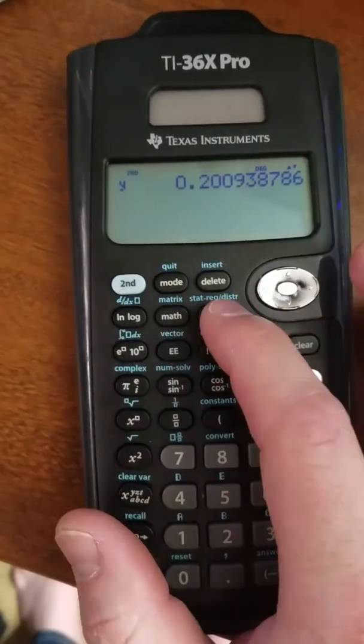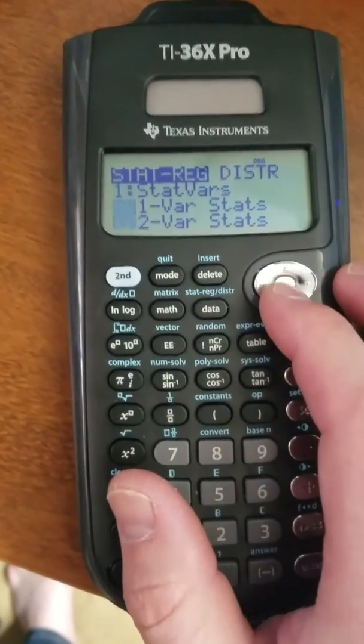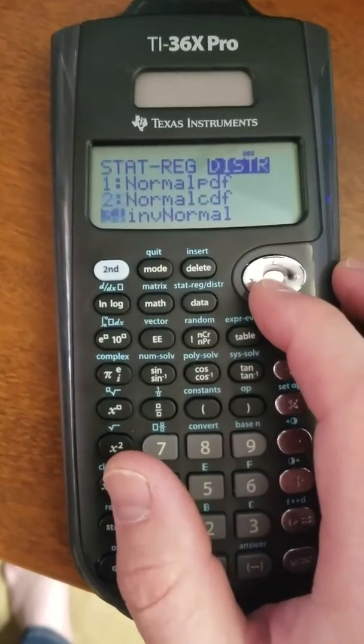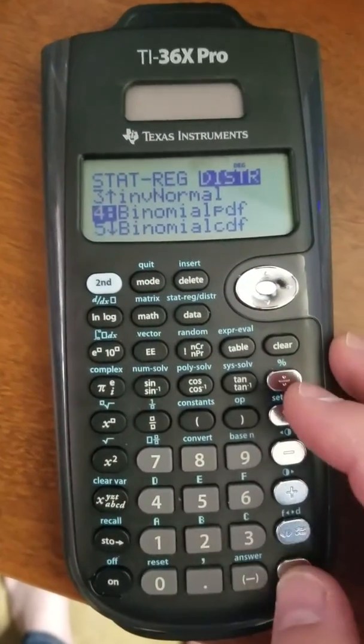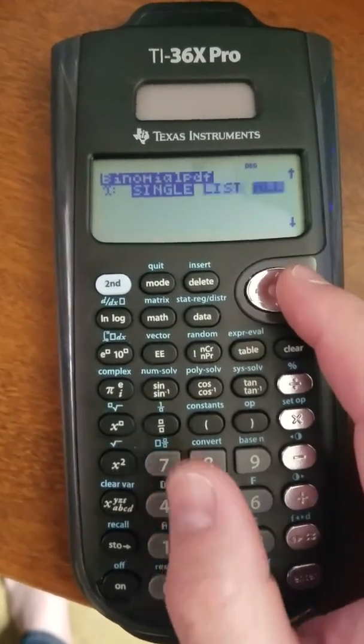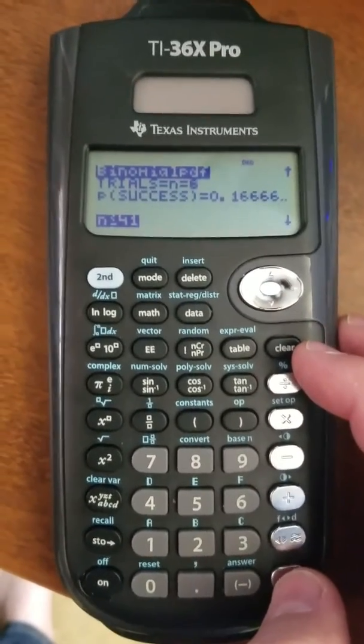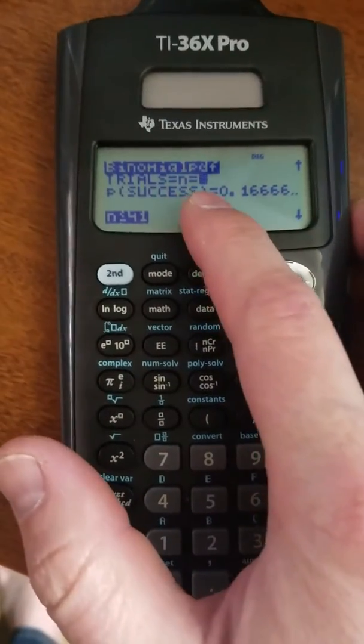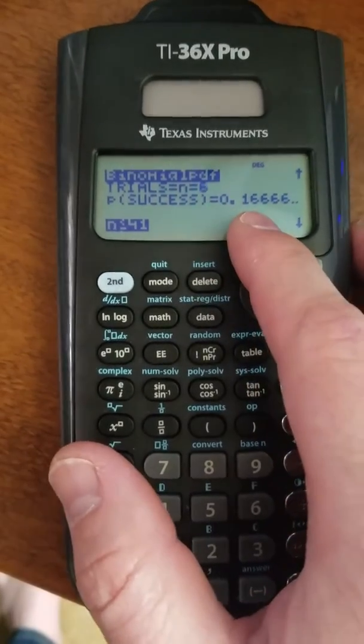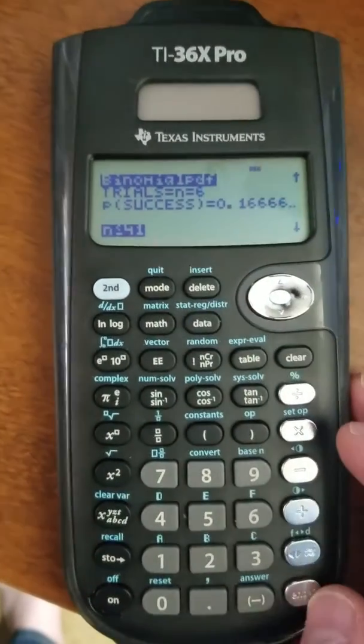All right. Let's look at the binomial PDF again. Over in distributions. Binomial PDF. But in this case, I'm going to look at all. So what all does is this gives me the entire distribution. You can see it gives me the number of trials and the probability of a success, but it doesn't ask for x.